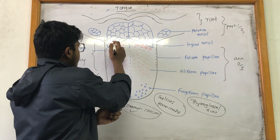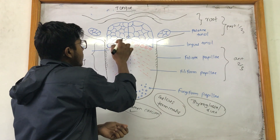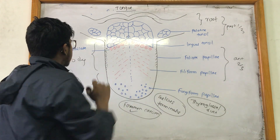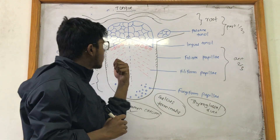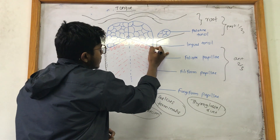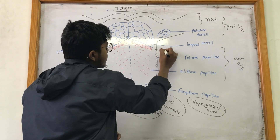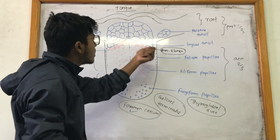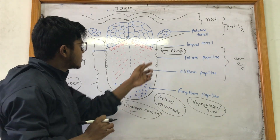In the anterior two-thirds, just in front of the sulcus terminalis, there are circular papilla with a central trench lined with taste buds. These are known as circumvallate papilla — the largest type, 10 to 12 in number. In the center of each circumvallate papilla, there is a duct where the von Ebner's serous glands open into the circular trench.